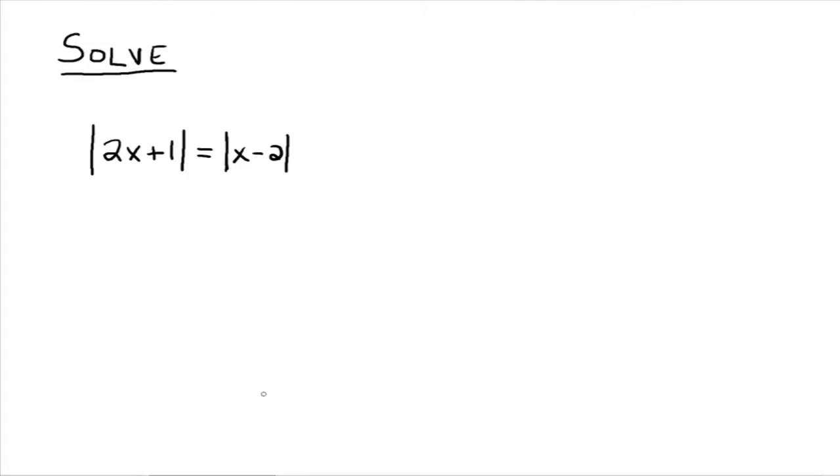Here's an example. Solve the absolute value of 2x plus 1 equals the absolute value of x minus 2. We have an absolute value equal to an absolute value, so the expressions inside, if they were equal, would make this true. Or if 2x plus 1 equals the opposite of the other expression—notice I put parentheses because it's the opposite of the entire expression, x minus 2—then the absolute values would also be equal.